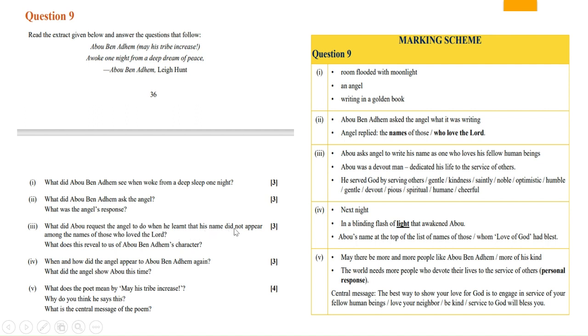Question number three: what did Abu request the angel to do when he learned that his name did not appear among the names of those who love the Lord? What does this reveal to us about Abu Ben Adhem's character? So Abu asks angel to write his name as one who loves his fellow human beings.